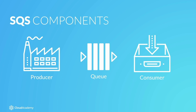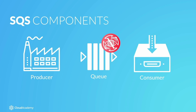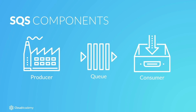This ensures that the message remains in the queue should a failure occur with one of the SQS servers. Consumers are responsible for processing the messages within your queue. When the consumer element of your architecture is ready to process a message, the message is retrieved and is then marked as being processed by activating the visibility timeout. When the message has been processed, the consumer then deletes the message from the queue.